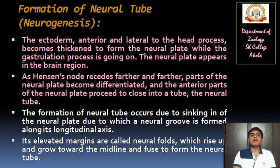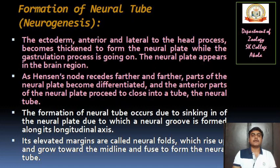Then formation of the neural tube — that is neurogenesis. The ectoderm anterior and lateral to the head process becomes thickened to form the neural plate. While the gastrulation process is going on, the neural plate appears in the brain region. As Hensen's node recedes further and further, parts of the neural plate become differentiated and the anterior parts proceed to close into a tube — the neural tube. The formation of the neural tube occurs due to sinking in of the neural plate, forming a neural groove along its longitudinal axis. Its elevated margins are called neural folds, which rise up and grow toward the midline and fuse to form the neural tube.